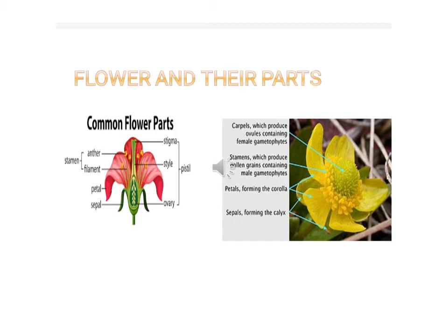Other parts of the flower are arranged in whorls or rings on the thalamus. Some flowers also have no pedicels and are known as sessile flowers. The main parts of the flower are sepals, petals, stamen, and pistil.